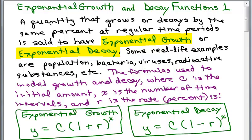A quantity that grows or decays by the same percent at regular time periods is said to have exponential growth or exponential decay, depending if it's growing or decaying. Some real life examples are population growth, bacteria, bacteria could be growing quickly, viruses, radioactive substances, et cetera.